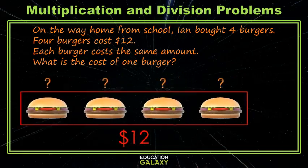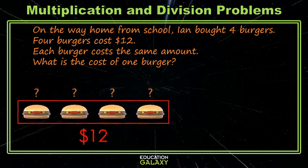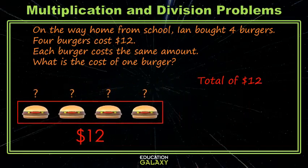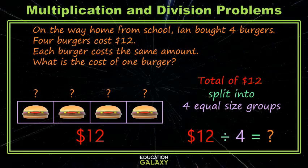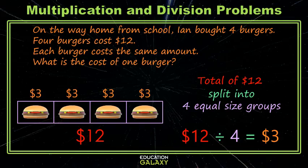Well, what we have here is a total. We have a total of 12 dollars and we're splitting that into four equal size groups. Each burger is its own little group. So when we have a total and we're splitting it into equal size groups and we want to know how many are in each group — or in this case how much each group costs — we use division. Now we're just solving 12 divided by four, which we know is three. So each of the burgers cost three dollars.